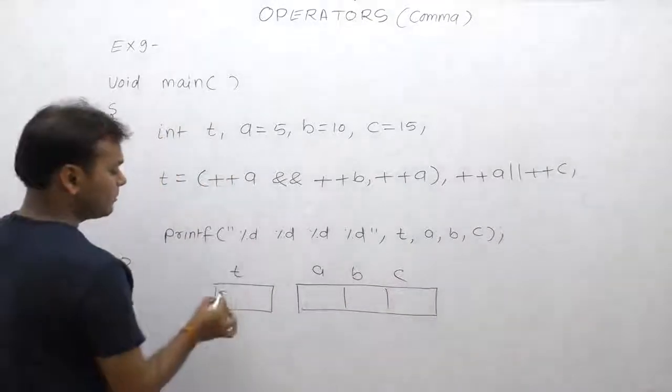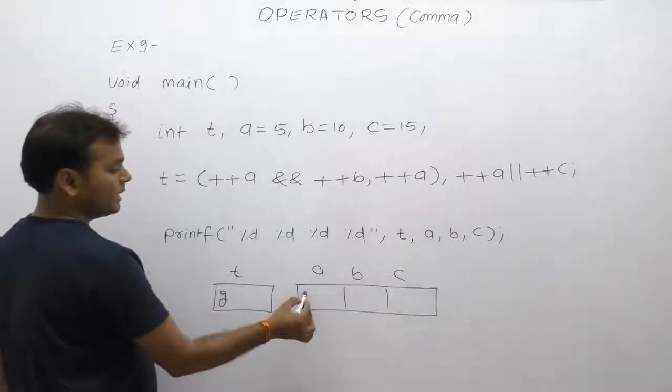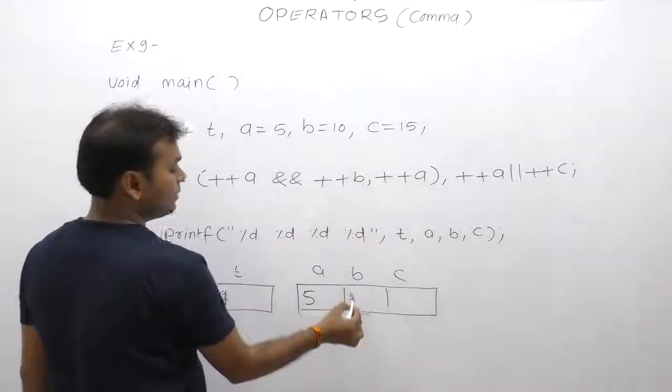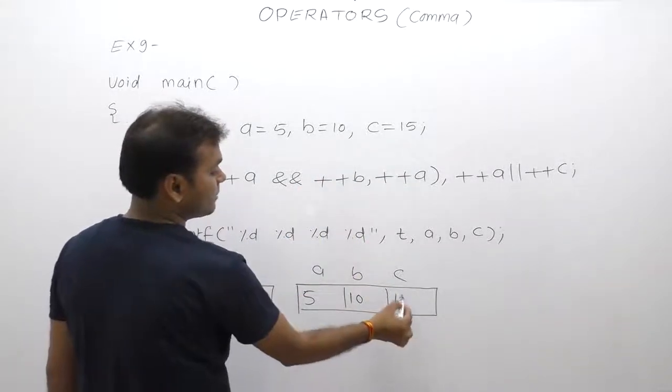Initial value of T is garbage. Initial value of A is 5, initial value of B is 10, initial value of C is 15.